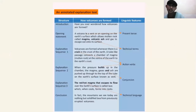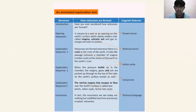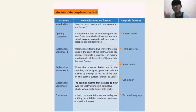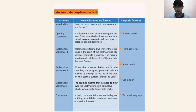We move again to explanation text structure. How volcanoes are formed — and its linguistic features. In the opening statement: 'A volcano is a vent or opening in the earth's surface which allows molten rock called magma, volcanic ash, and gas to escape into the surface.' You can see the linguistic features here: the use of 'is' — present tense. As mentioned in the previous slide on linguistic features, present tense is used, along with technical terms and action verbs like 'crack,' 'run,' and conjunctions like 'and.'